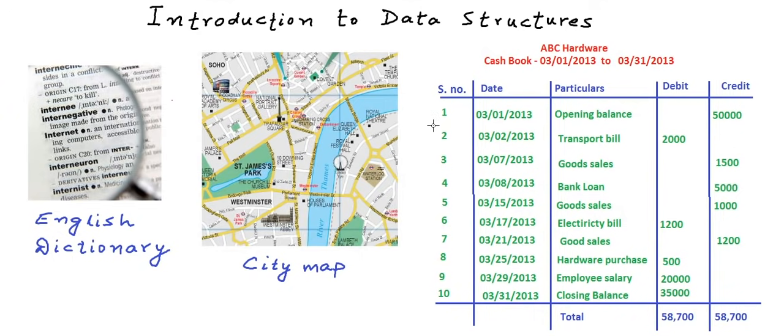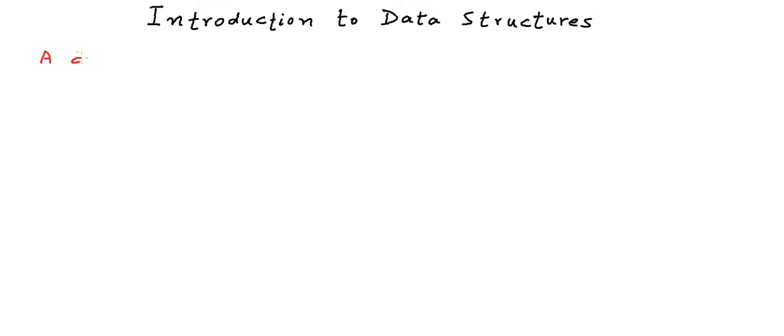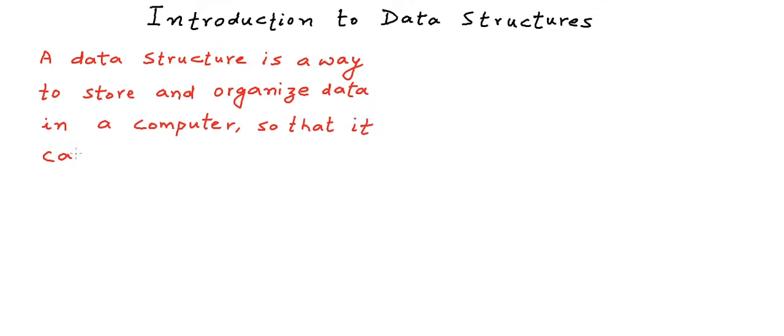Formal definition of a data structure would be that a data structure is a way to store and organize data in a computer so that the data can be used efficiently.